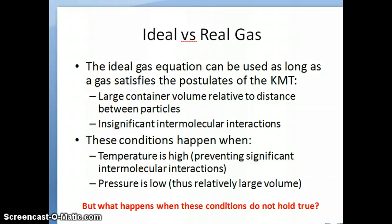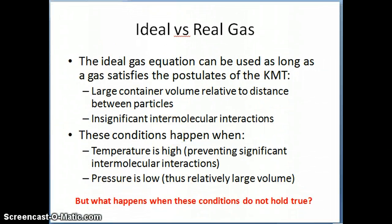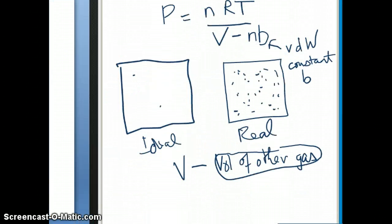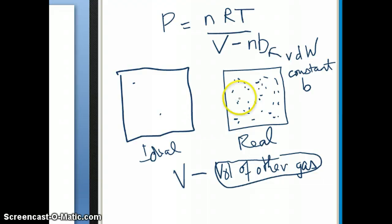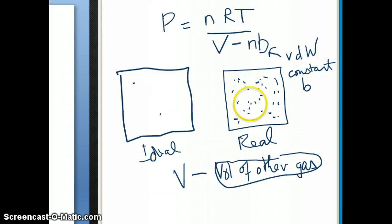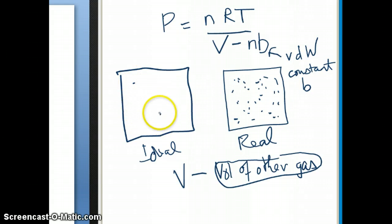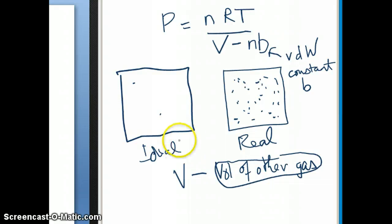Now we're going to talk about the second correction. When you have a lot more particles and these particles are not moving very fast — which means at lower temperature, since temperature corresponds to speed — there are a lot more chances they will make some kind of intermolecular attraction. Compared to the ideal case where there are only one or two particles moving fast with a lot of distance between them, now the distance is much shorter and they're moving more slowly. That's why temperature is also a factor in making the condition less ideal.